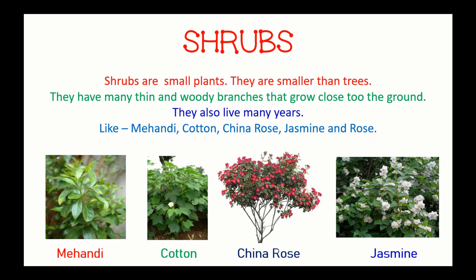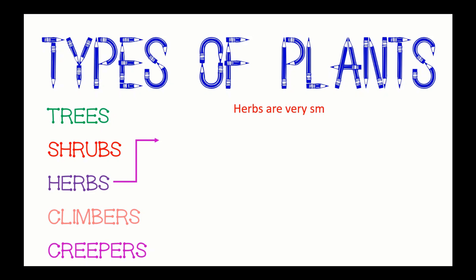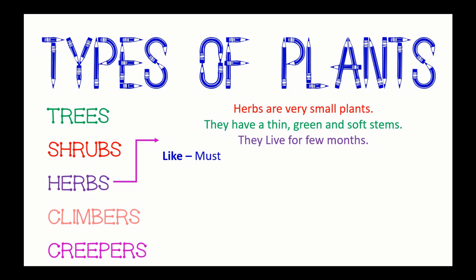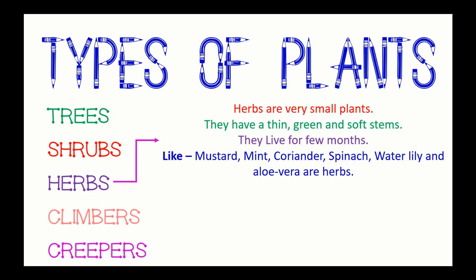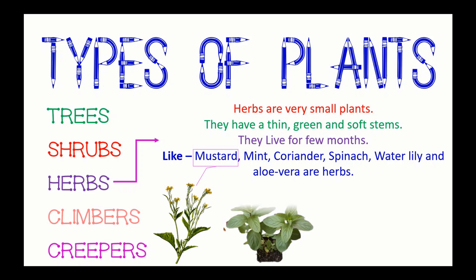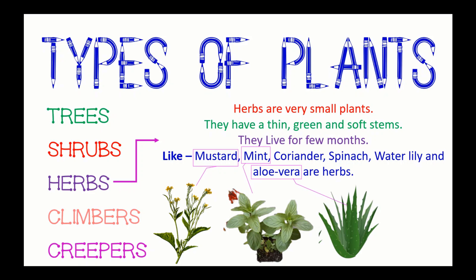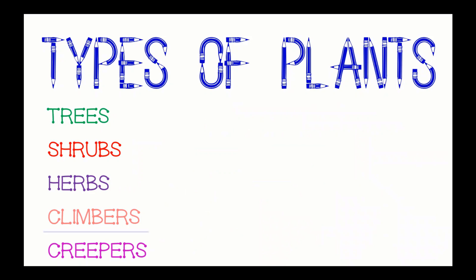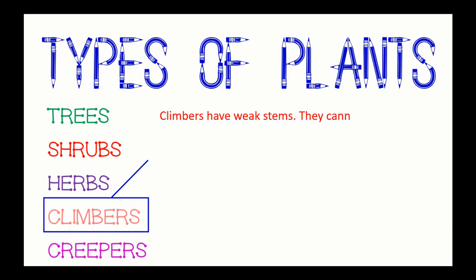Herbs are very small plants. They have a thin, green, and soft stem and they live for only a few months. Examples of herbs include mustard, mint, coriander, spinach, water lily, and aloe vera. Most of the herbs are also used as medicine.